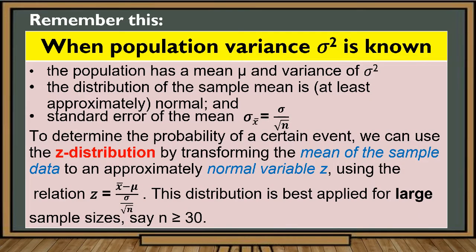When population variance is known, remember the following: the population has a mean which is the population mean and variance which is the population variance. The distribution of the sample mean is at least approximately normal, and the standard error of the mean is given by the formula: the standard deviation of the sample mean equals the population standard deviation divided by the square root of the sample size n.